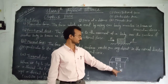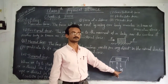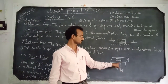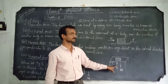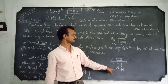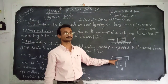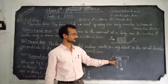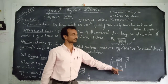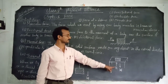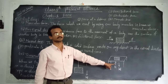In the downward direction, the weight of the book or gravitational force acts on the book. In the upward direction, normal force acts on the book as well. Though the weight or gravitational force is acting downward, the book is not falling down because of the normal force.